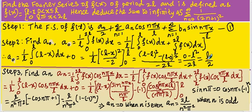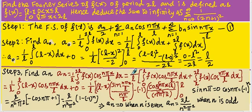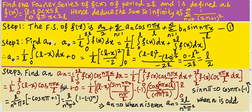Step number 3 is to find an. We know that an equals 1/L times the integral from 0 to 2L of f(x)·cos(nπx/L) dx. Since there are two intervals — 0 to L and L to 2L — we write: 1/L times the integral from 0 to L of (L minus x)·cos(nπx/L) dx plus the integral from L to 2L where f(x) = 0. This is the integral of u·v dx model.